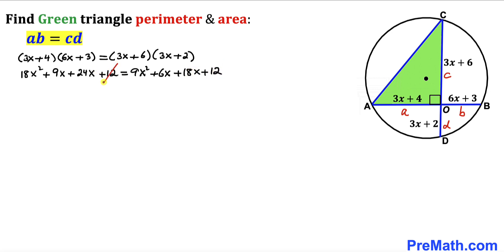We can see this 12 cancels out with the 12 on the right-hand side. Combining like terms on both sides gives us 9x² + 33x on the left equal to 9x² + 24x on the right.